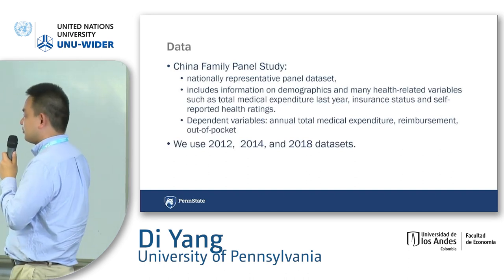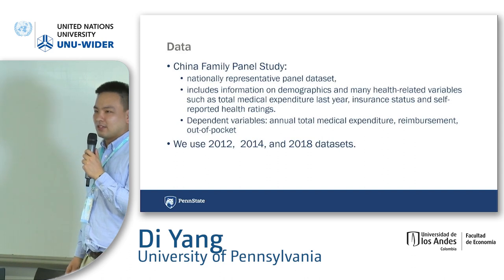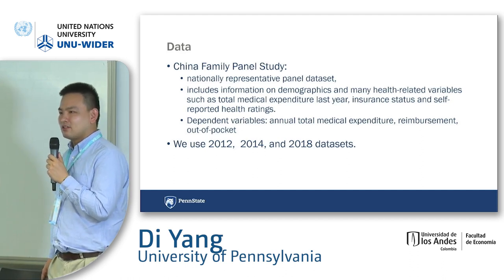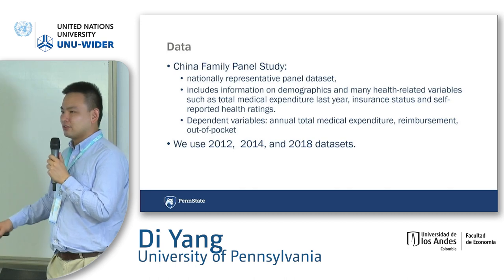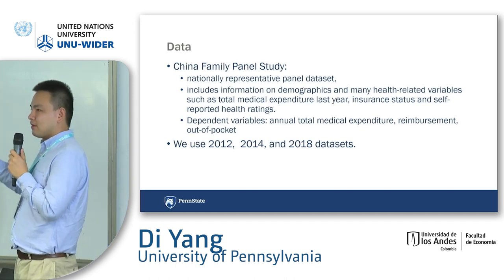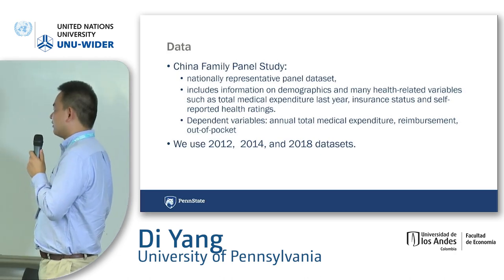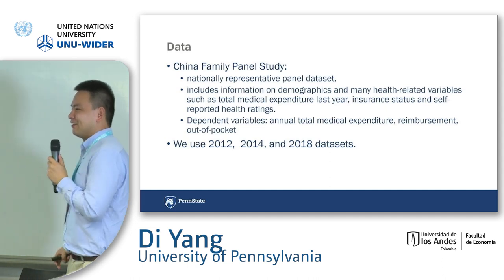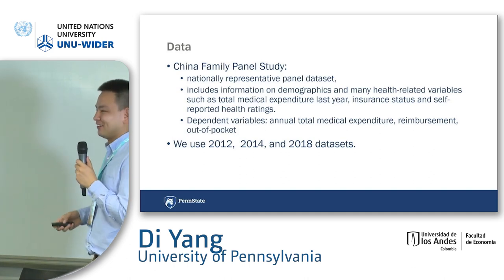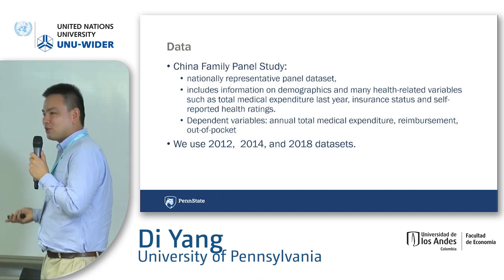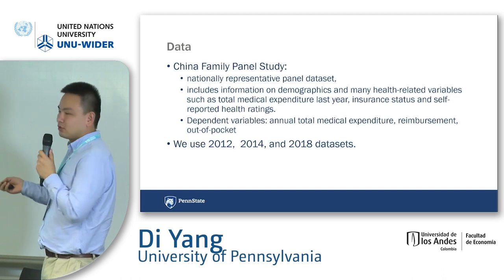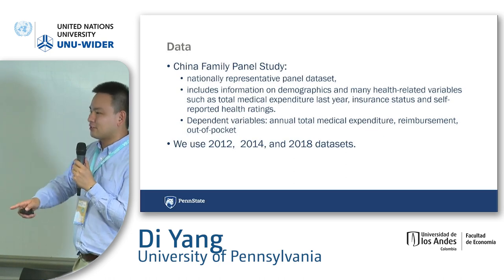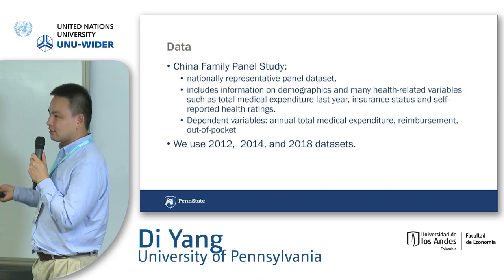The data I use is the China Family Panel Study, conducted every two years with about 20,000 to 30,000 individuals sampled each wave. It's a panel study, so the same households are tracked every two years, and it asks a lot of questions across healthcare, demographics, and occupation — the questionnaire is about 50 pages long. We use the 2012, 2014, and 2018 datasets. We don't use 2016 because the consolidation happened that year, so we can't classify it as pre- or post-consolidation.